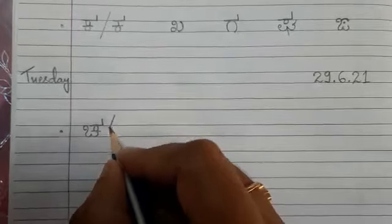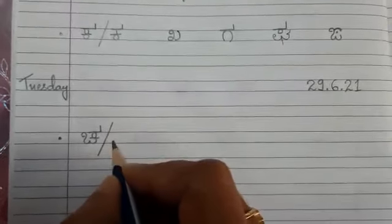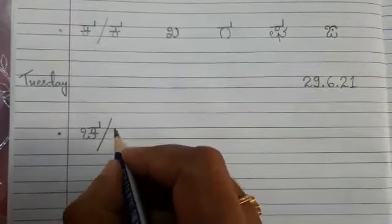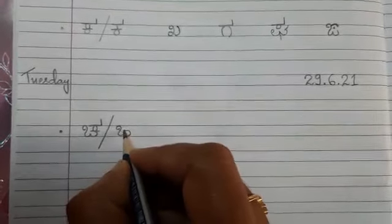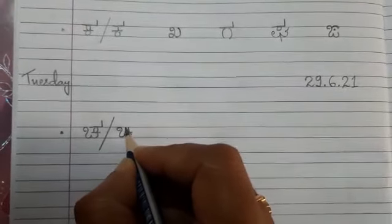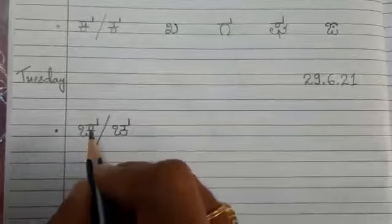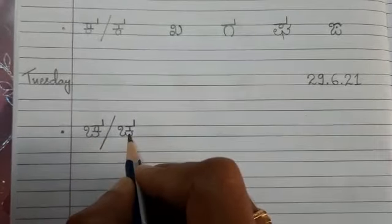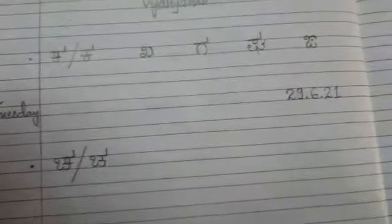You can try in one more way also, that is also correct. See, instead of zero, you can put one small standing line. This is also correct, you can write in both the ways.